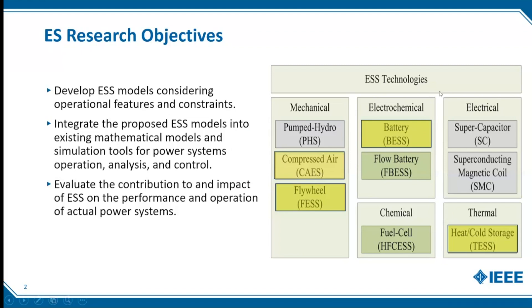We focused specifically on four basic technologies: compressed air energy storage, flywheels, batteries, and thermal energy storage. These technologies were chosen because our collaboration with industry, particularly the system operator of Ontario, was deploying these technologies and wanted to better understand their impact and how to model them with respect to their network.